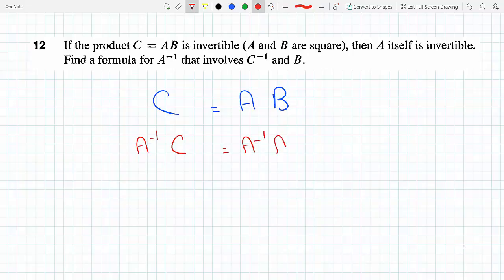So A inverse times AB equals C, right? But that's not what we're interested in. We're interested in A inverse. Now this A inverse A is the identity matrix, which is the identity matrix times B, which just gets us B.